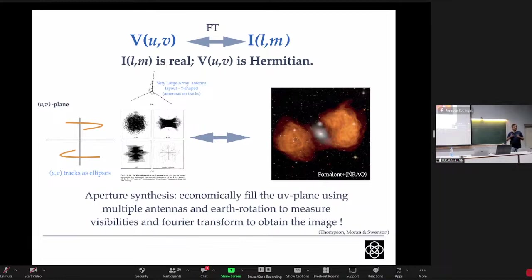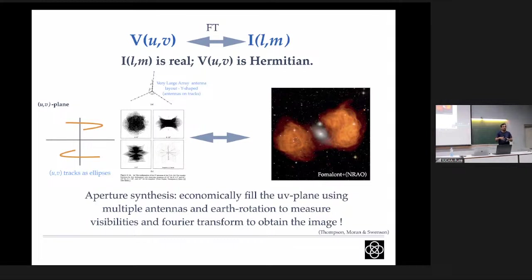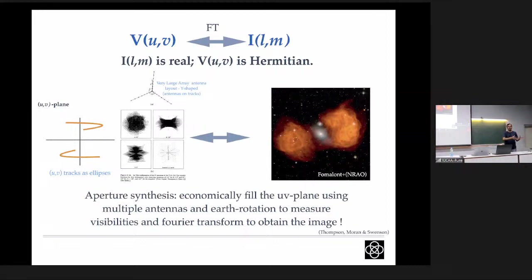In the Event Horizon Telescope, dishes are spread across continents. In the case of GMRT, the signal from each antenna is brought to a central electronic station and then correlated - a complex correlation that gives complex visibility. When dishes are spread over continents, this cannot be done in real time because we are getting samples every microsecond and must correlate immediately or the phase information is lost. So in the Event Horizon Telescope, the data is collected with time stamping, stored on disks, brought by plane to a common location, and then correlated.